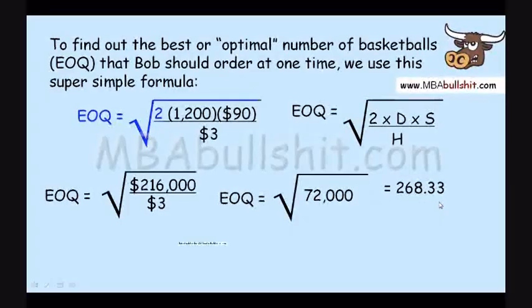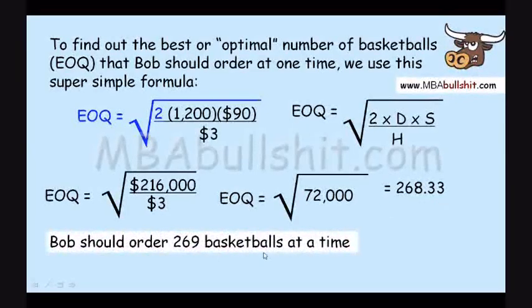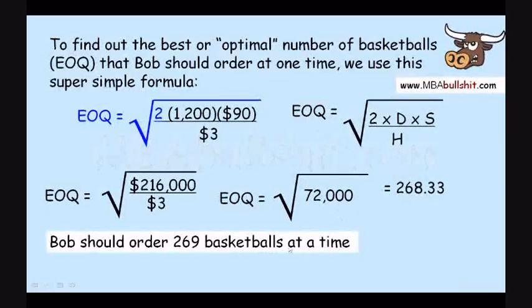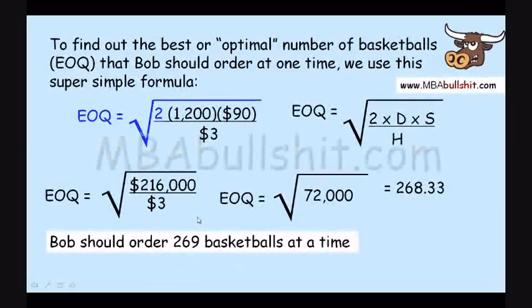What do we learn from this? We learn that Bob should order 269 basketballs at a time. If Bob orders 269 basketballs at a time, he will have the lowest cost overall. For example, if he buys 250 basketballs at a time, his cost will go up because it's less than 269. If Bob orders more than 269 basketballs at a time, if he buys 280 basketballs at a time, his cost will also go up. The optimal best number is 269.